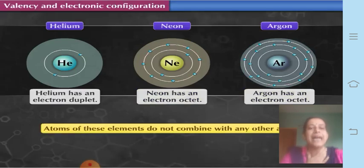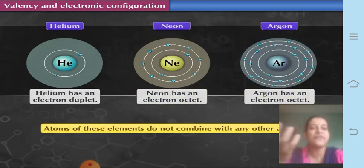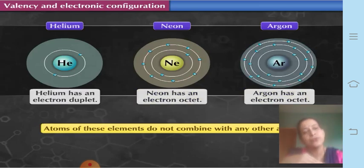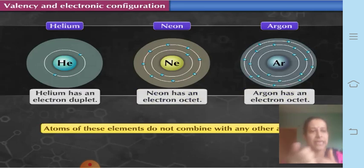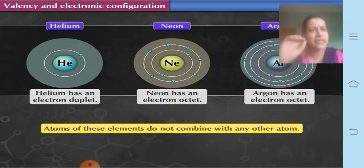The atoms of these elements do not combine with other elements. This is because their shells are completely filled, and therefore they do not need to take any electron from outside, neither do they give electrons to other elements, and since they cannot give, take, or share electrons, they do not combine with any other atom.